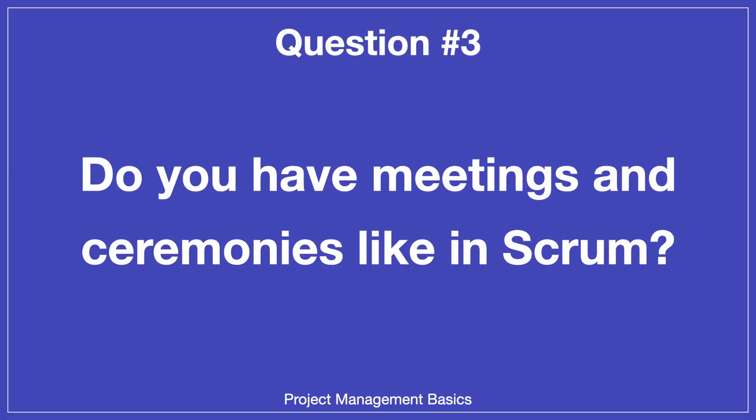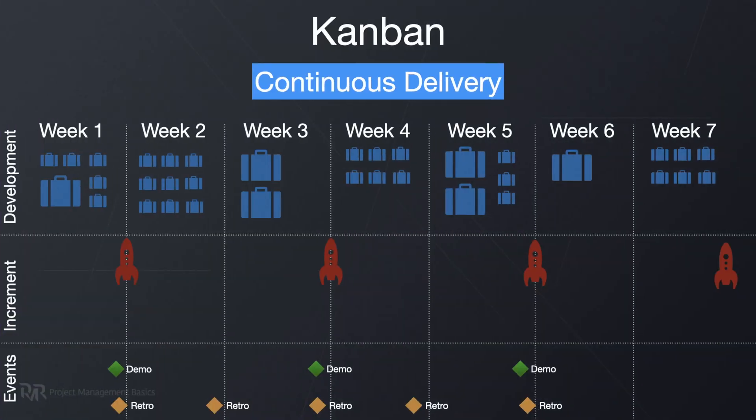Do you have meetings and ceremonies like in Scrum? The Kanban approach does not prescribe meetings and ceremonies, but it implies you can introduce some routines. Kanban is a continuous process — it never stops. However, in the real world it's very hard to deliver each separate task directly to end users. Instead, you set up a cadence to deliver results to customers. For example, you can have a demo every two weeks and release a new product version afterwards, with retrospective meetings and backlog groomings every week. This cadence is a super-structure of your main Kanban workflow.